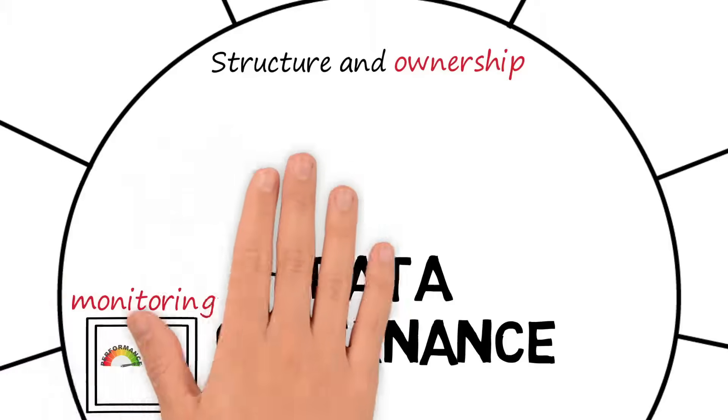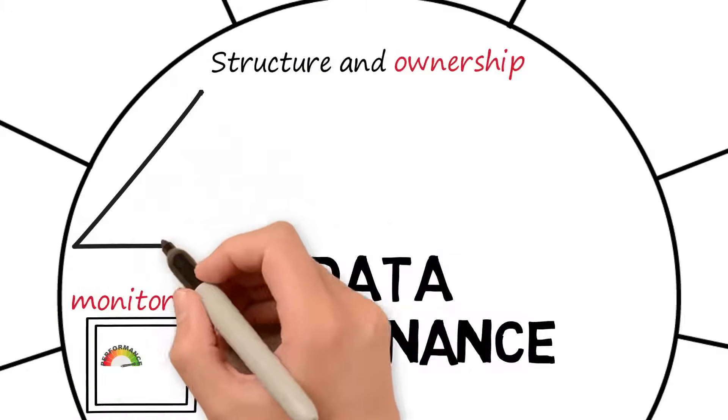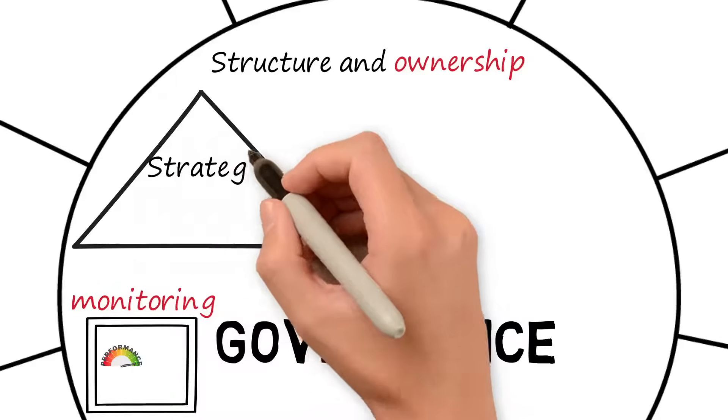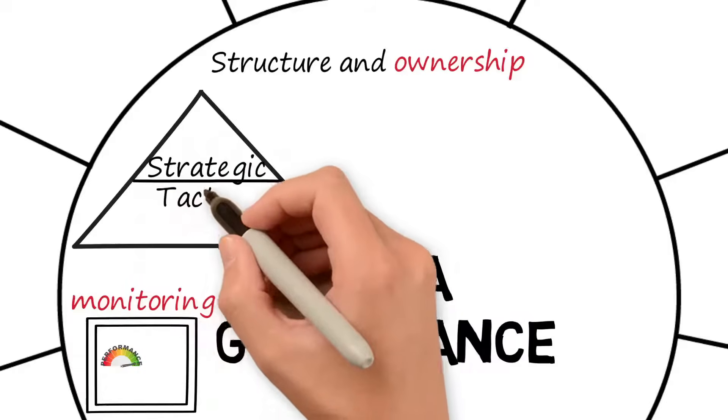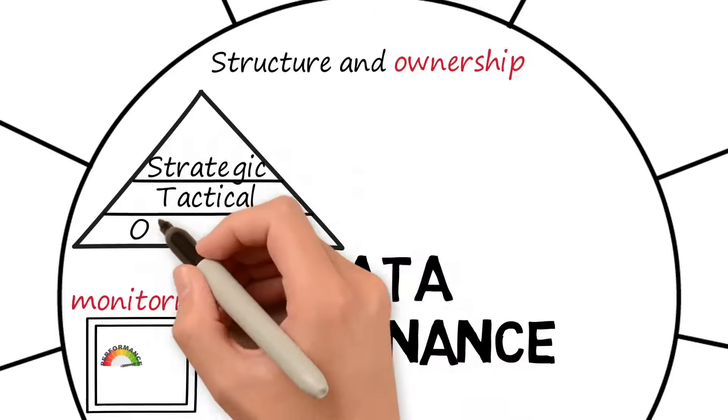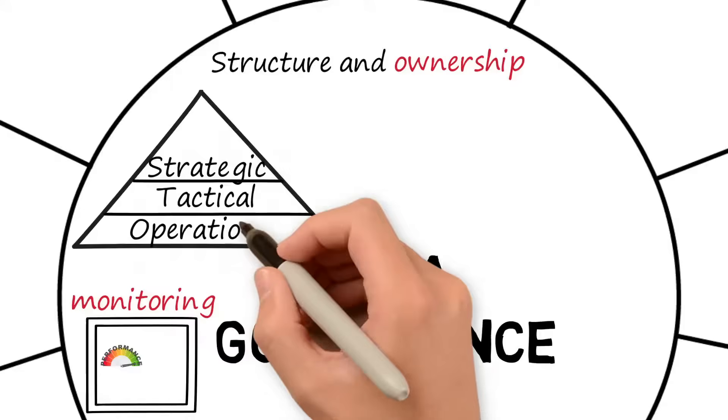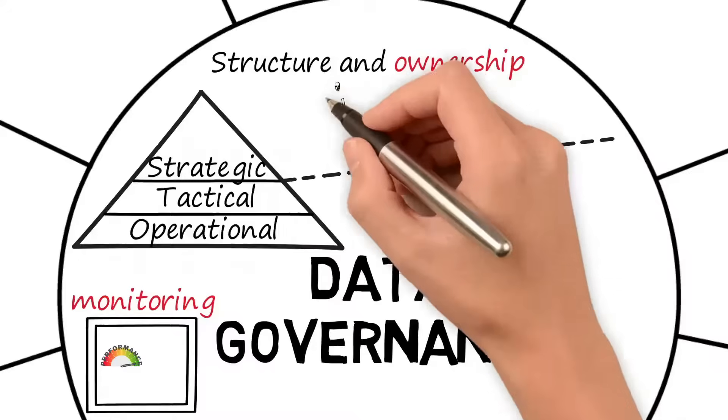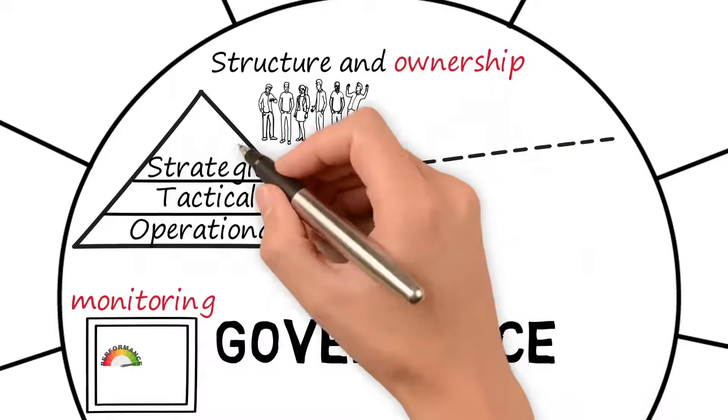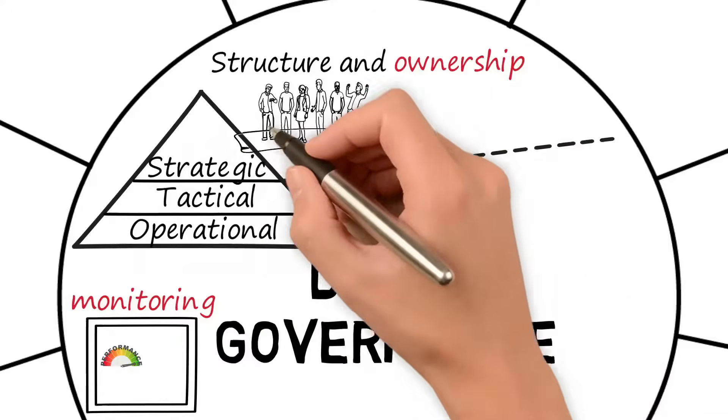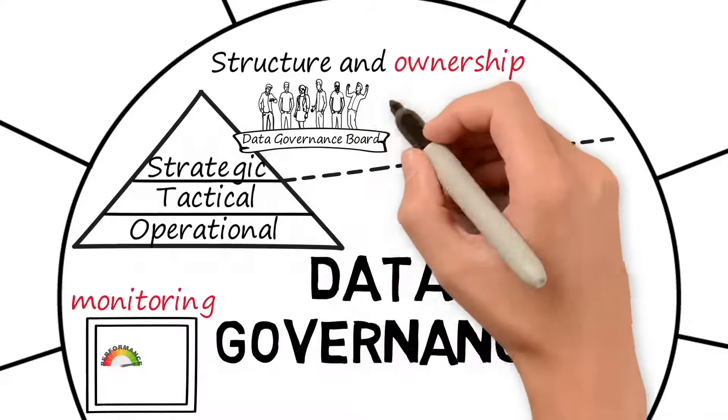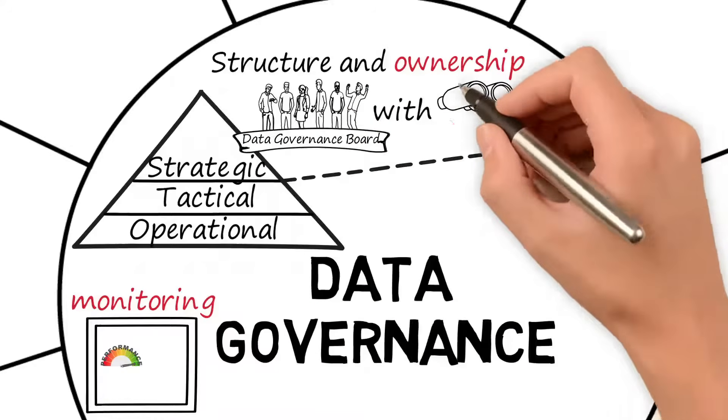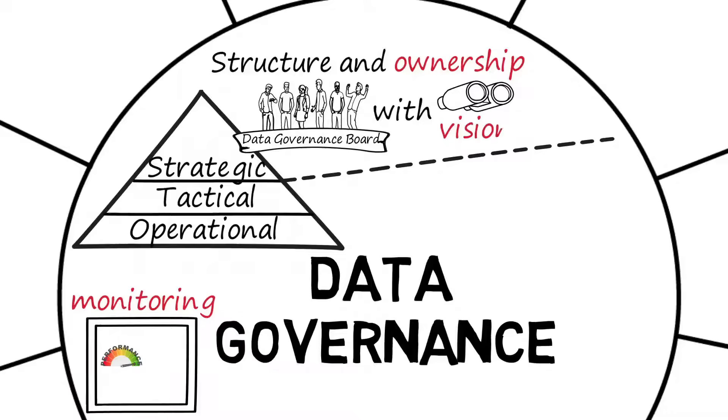Within data management, structure and ownership is also necessary. The structure is translated into a strategic, tactical and operational level. Data ownership and a data governance board are appointed on the strategic level. A data governance board is a small group of people who represent the entire organization. They are allowed to make decisions and have a data vision which is on par with the data architecture.